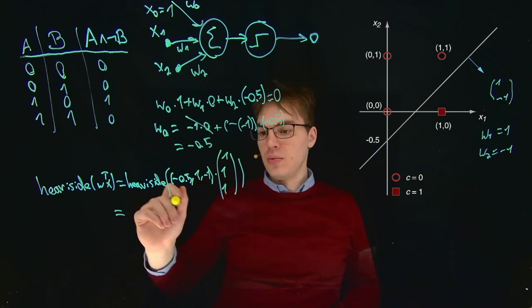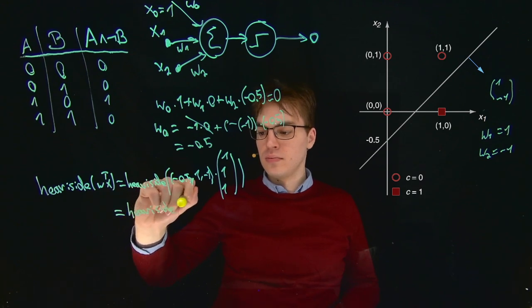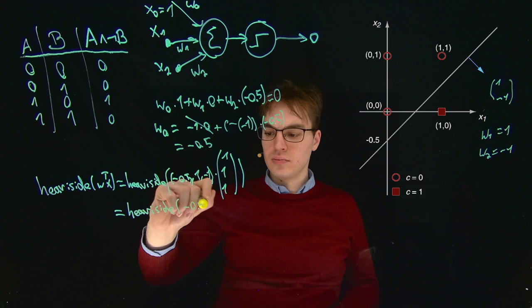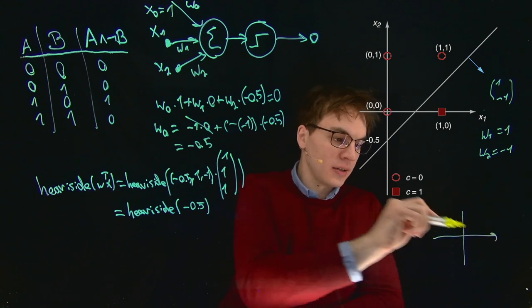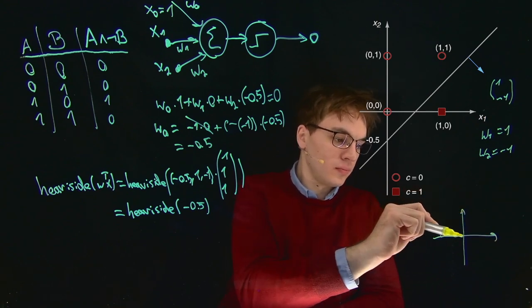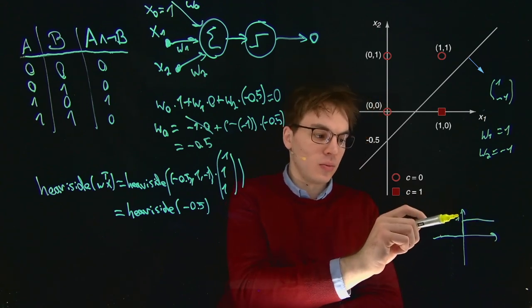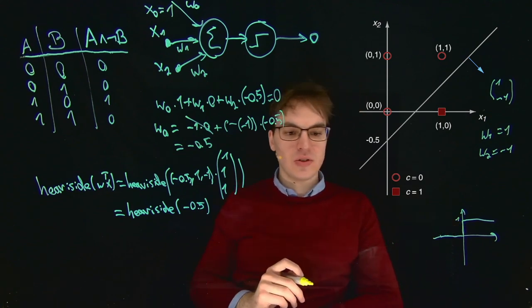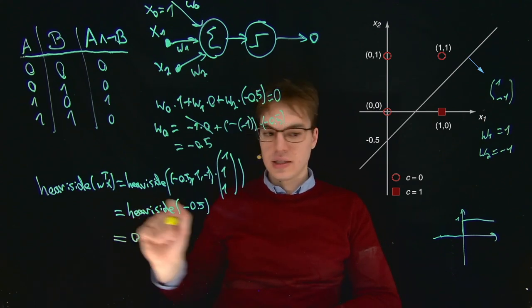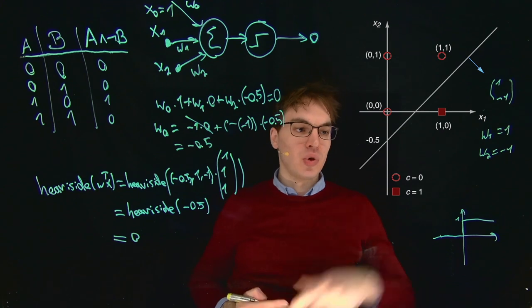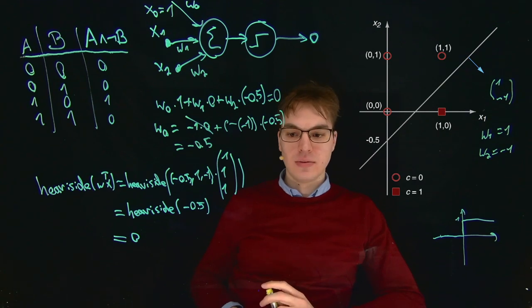Let's see what we get. Sum these values up. What we get is minus 0.5. If we now consider the Heaviside function, it becomes 1 for all positive inputs. But here we have a negative input, so we get 0. So our result is 0, and this is actually the correct prediction, because we want at this point to be classified as false, or C equals 0.